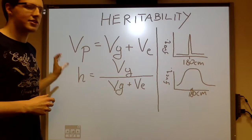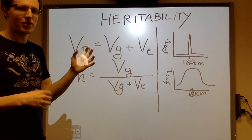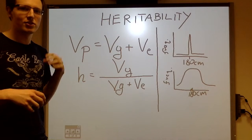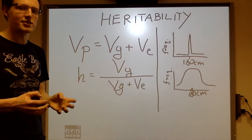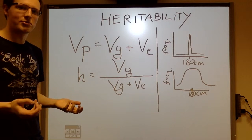Now, heritability is defined as the genetic variance divided by the total phenotypic variance, or the genetic and the environmental combined. And this is what the definition of heritability is.